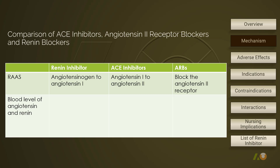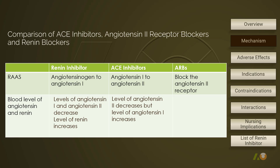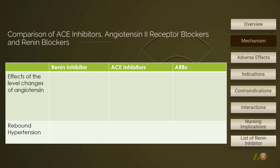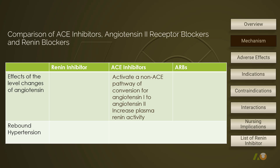Angiotensin 2 receptor blockers block the receptors that angiotensin 2 binds to. The levels of angiotensin are affected by these medications. A renin inhibitor decreases both levels of angiotensin 1 and angiotensin 2. ACE inhibitors decrease the level of angiotensin 2 but increase the level of angiotensin 1. With ARBs, there will not be as many receptors to bind to, and the result would be an increasing level of angiotensin 2.